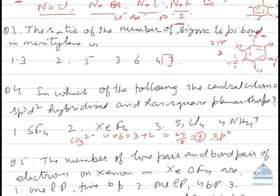In the same way, for XeF₄: xenon has 8 valence electrons, fluorine has 7 multiplied by 4. The total comes out to be 36. Divide by 8 — the remainder is 4, which gives two pairs. That means six orbitals are involved, so it is sp3d2 hybridization.